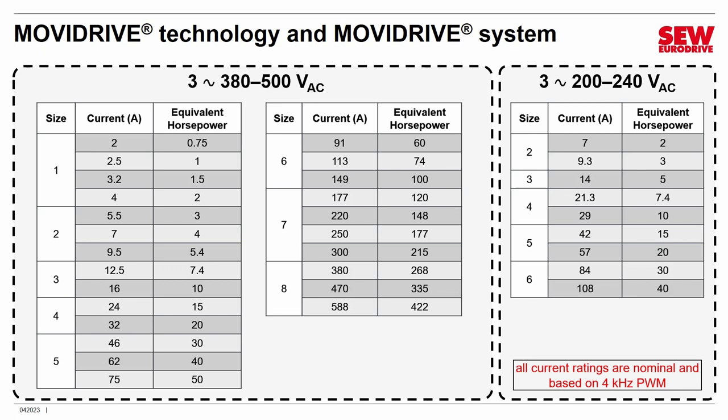These ratings are nominal and are based on pulse width modulation at 4 kilohertz, which is the lowest frequency. At 4 kilohertz, PWM is audible to some people, so in some settings — like a quiet environment such as a theater — you have to switch the VFD to a higher frequency so it can't be heard. When you do that, the drive runs a little hotter and you have to derate these numbers. But at 4 kilohertz in a factory environment where it's already noisy, these numbers apply.